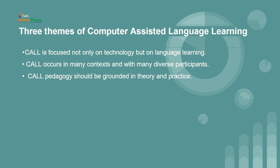There are three themes of computer assisted language learning on which it is based. First, CALL is focused not only on technology but on language learning. It primarily means we are not just focusing on how it can be brought with audio, video, text and narration, but also how we help learners to facilitate learning. The words 'enhanced' and 'assisted' are used to make you understand that the computer only facilitates the language in the learning process.